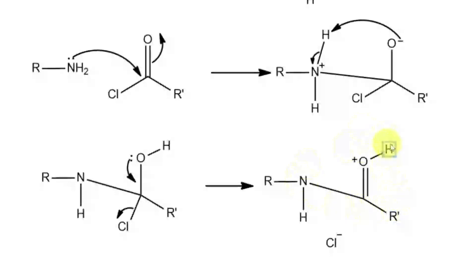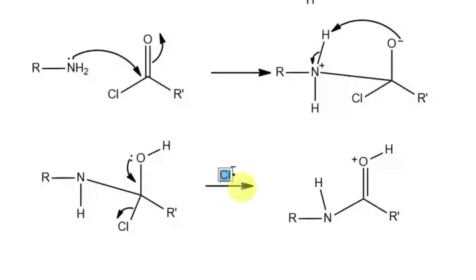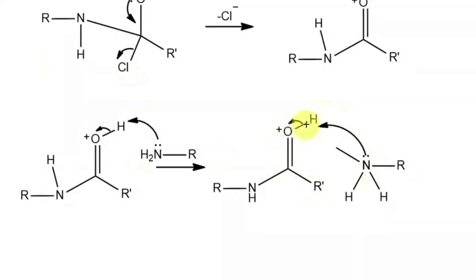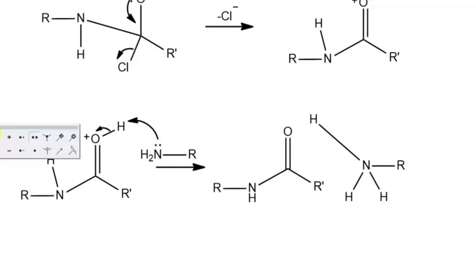Now what we have is a protonated amide, and deprotonation can take place in many ways. We have a good base in the system — our starting material amine is a good base, so the amine can pick up this proton. There is going to be a new bond between this nitrogen and hydrogen, and at the same time this O-H bond is going to break — both electrons remain on oxygen. So the positive charge is removed, the amide is now free and deprotonated, while the amine is protonated and nitrogen will have a positive charge. Now we have the product.